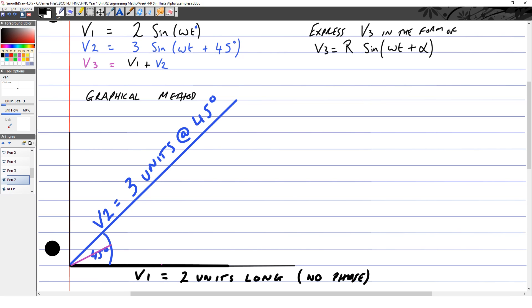V2 is three units long, at an angle of 45 degrees, so you need to make sure you use your ruler to measure them and make the angle with a protractor.